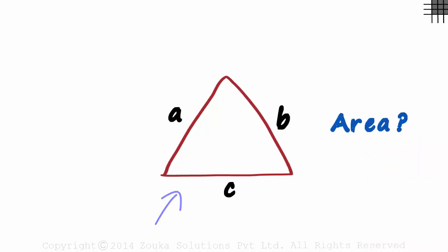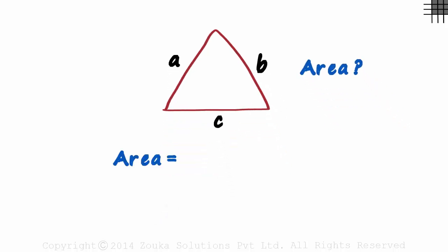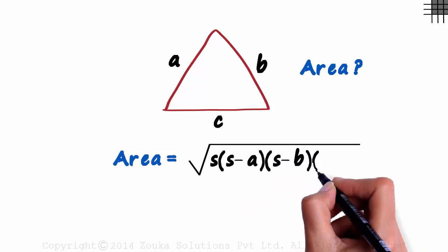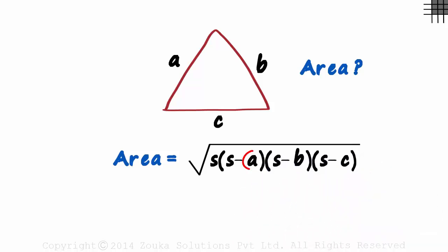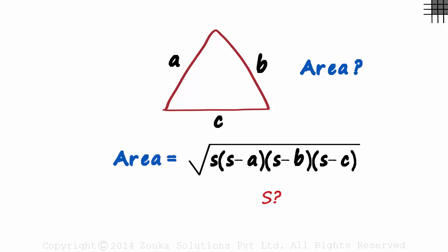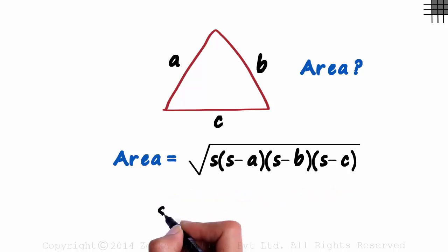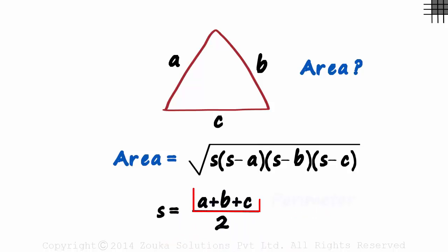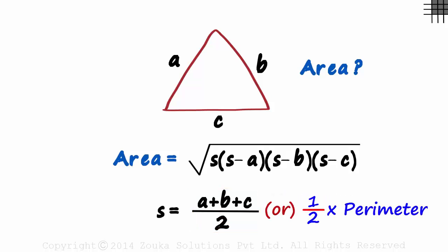We have a formula for it. The area equals the square root of S times (S minus A) times (S minus B) times (S minus C). A, B, and C are the lengths of the triangle. But what on earth is S? It is the semi-perimeter of the triangle — S equals A plus B plus C divided by 2, that is, half the perimeter.